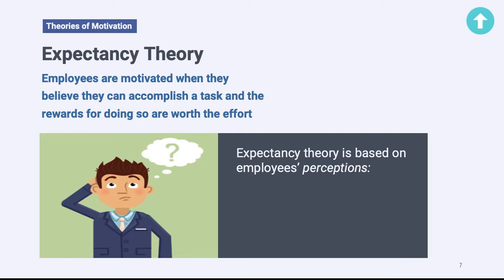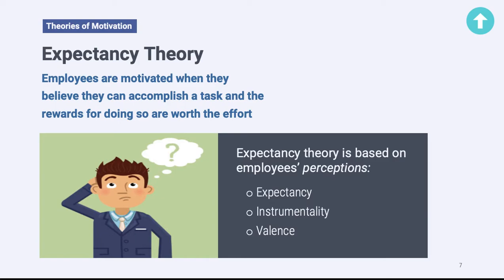If you've ever heard the old adage 'perception is reality,' that certainly applies here. As a manager, we need to assess the situation from the employee's perspective in order to understand whether or not they are likely to be motivated. There are three different perceptions included in expectancy theory, and they are called expectancy, instrumentality, and valence. We are going to go through each of these on the next couple of slides.